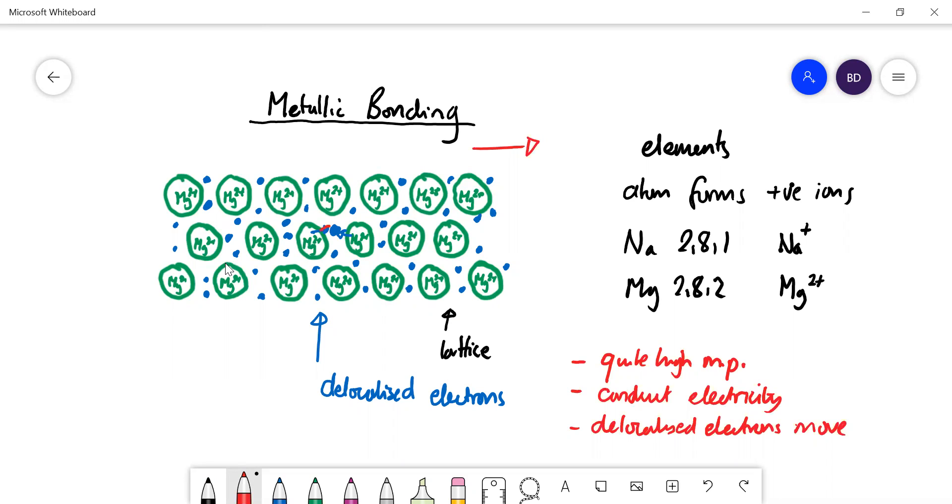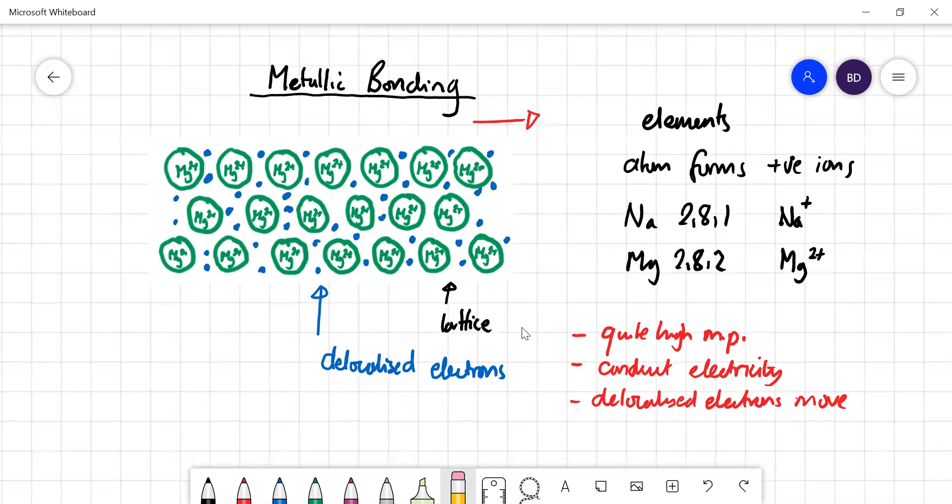The fact that they've got delocalized electrons also makes metals fairly good—not just conductors of electricity—but they're good heat conductors.